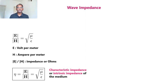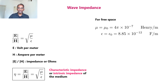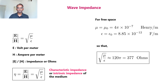Now let us calculate the intrinsic impedance of free space. We know that mu_0 equals 4π times 10 to the minus 7 henry per meter and epsilon_0 is 8.85 times 10 to the minus 12 farad per meter. The square root of mu_0 divided by epsilon_0 is approximately equal to 377 ohms, sometimes denoted by 120π. So 377 ohms is the impedance of free space.